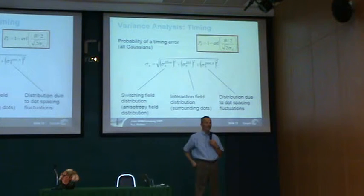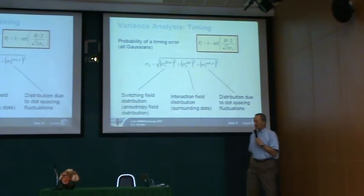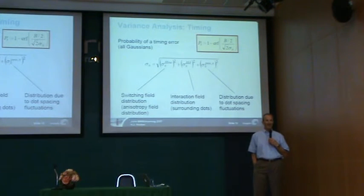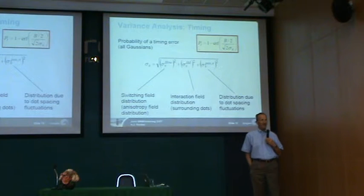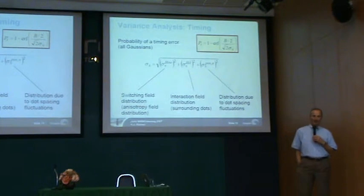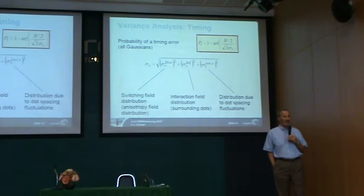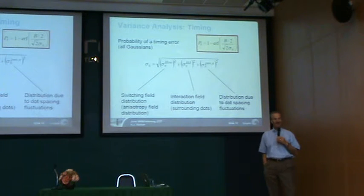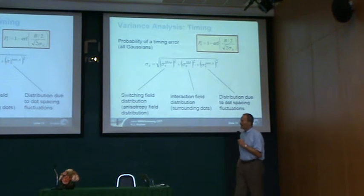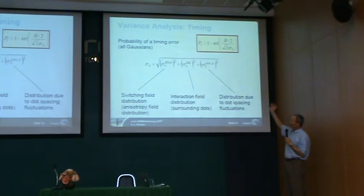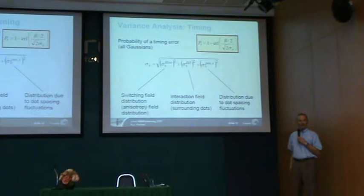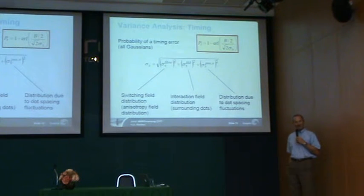How bad is it? There are various sources of timing errors possible in the disk drive. This is a fairly simple analysis that assumes these various sources are all Gaussian — they have a Gaussian variance in terms of their statistics. That's probably not a bad assumption; most things in nature tend to be Gaussian. So if you have a Gaussian probability, then the probability of a timing error is given by that equation in the upper right: one minus the error function of the bit spacing over two divided by the square root of two over sigma.